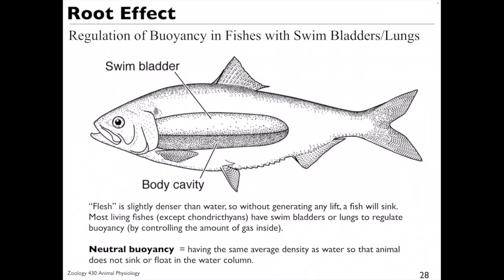Finally, let me tell you about the root effect — a really cool effect that involves hemoglobin. It has to do with the swim bladder, an organ that helps fish maintain buoyancy in the water column so they don't have to expend energy maintaining their position — like an oxygen-filled sac. Given that fish live in water, an environment with low oxygen, how do they fill this swim bladder full of oxygen?